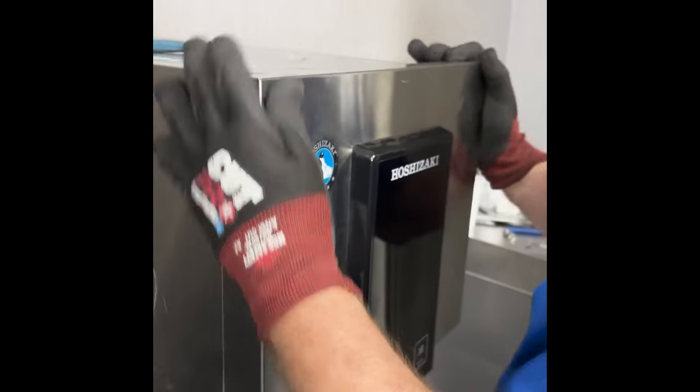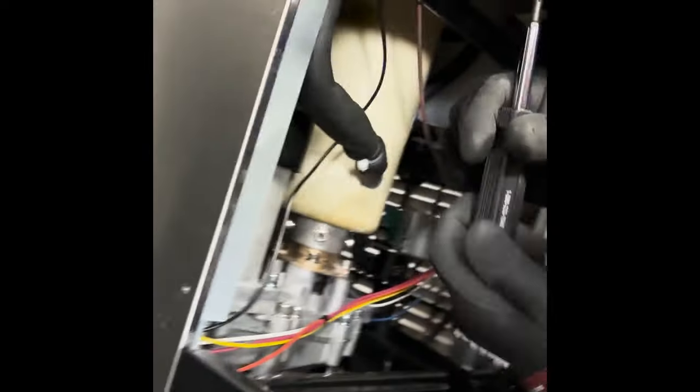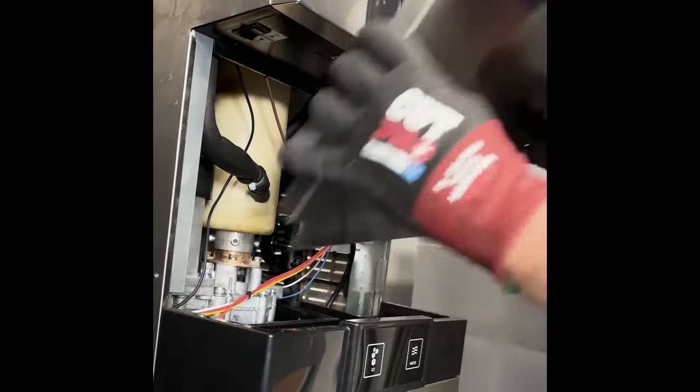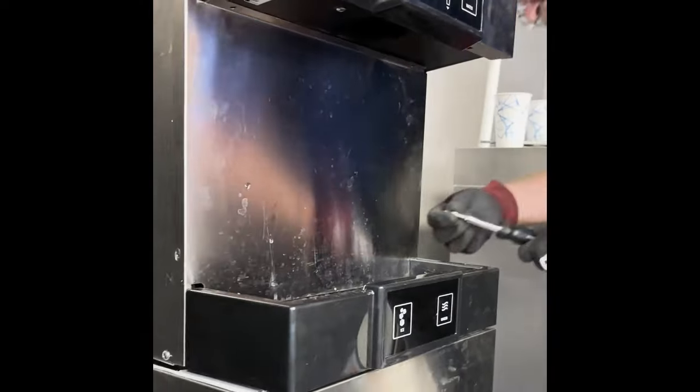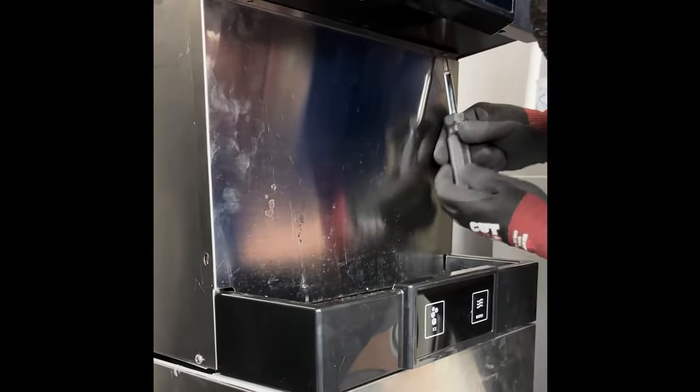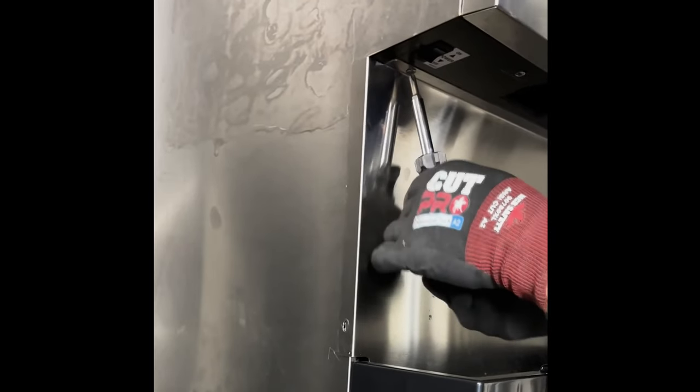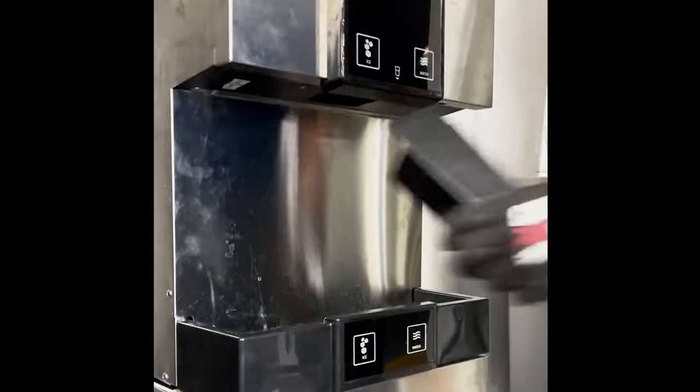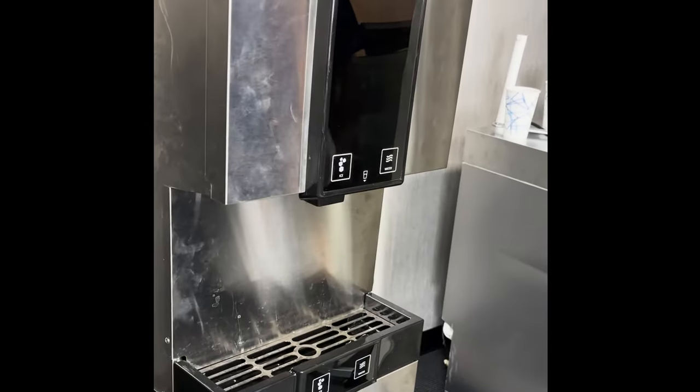Put your front panel back on. This tab needs to go above right here in that notch. The top needs to go over this flange on the top. One screw on each side, two screws on top. Our parts have been cleaned, sanitized, and put back in place. And that's all there is to it.